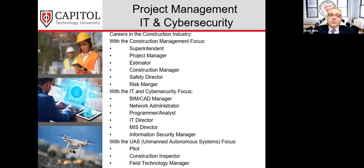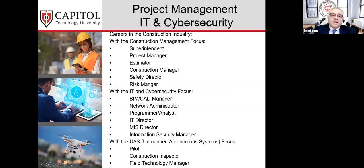Here's a list of potential career paths from this program. Traditional construction management paths include superintendent, project manager, estimator, safety and risk management. If you have more desire for IT and cybersecurity, you could go into BIM management, building information modeling, network administration, IT director, MIS director, cybersecurity manager. Or you might want to go into unmanned systems — some construction companies have entire divisions just for that.